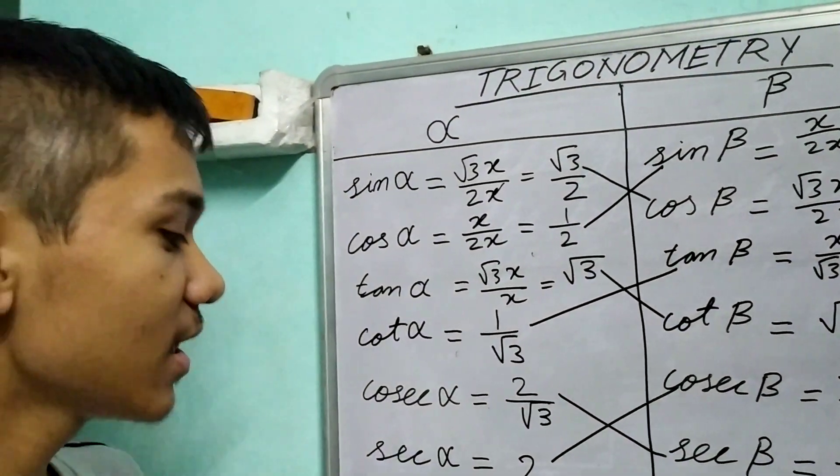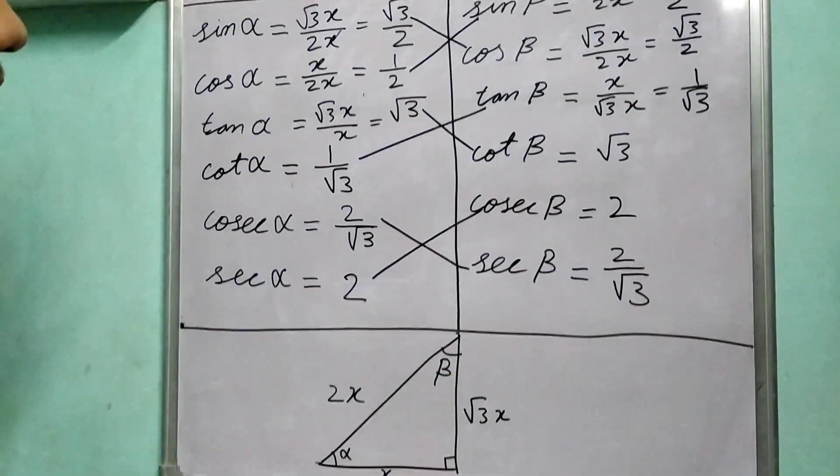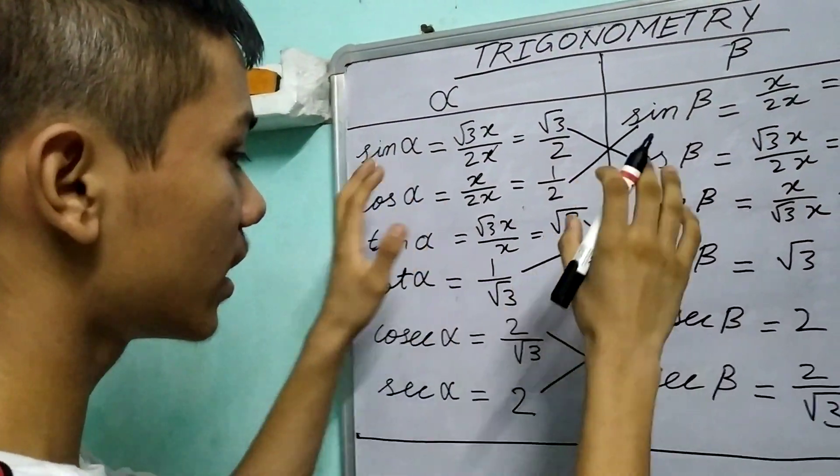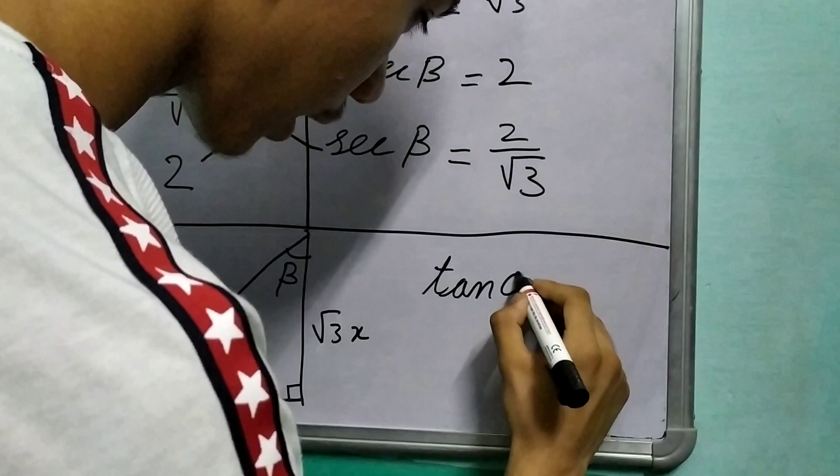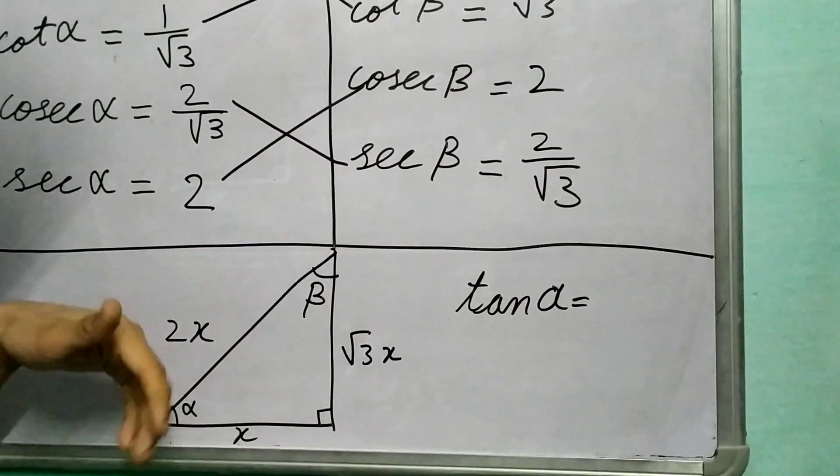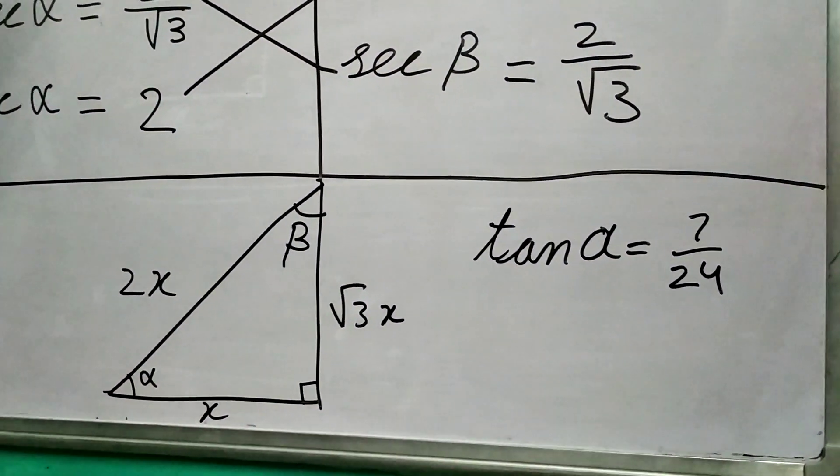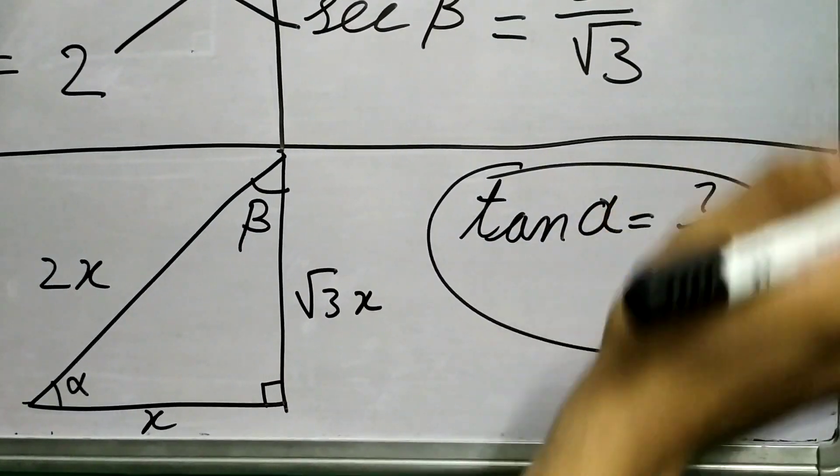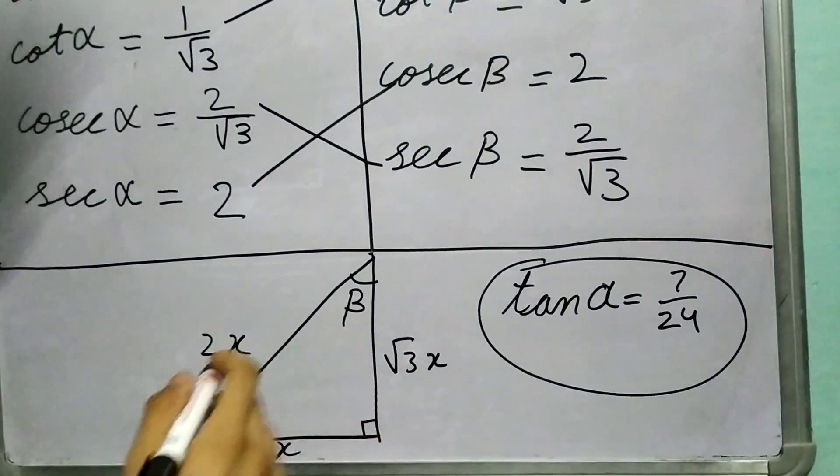Now, why is this true? Or is this just valid for the case I have taken here—x, √3x, and 2x triangle? I want you to think about it. If you think it's just valid for this case, try to solve this question again. But this time, keep the value of tan α as, say, 7/24. You will get some clean values for hypotenuse. I need you to do this on your own.